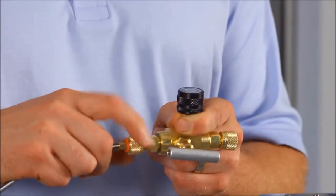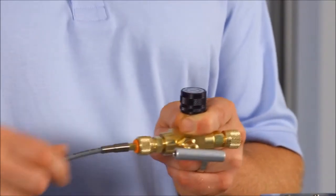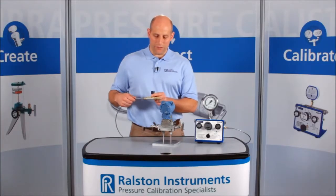Just connect the block and bleed valve to the QuickTest hose on your pressure source. Then connect the block and bleed valve to your device under test.